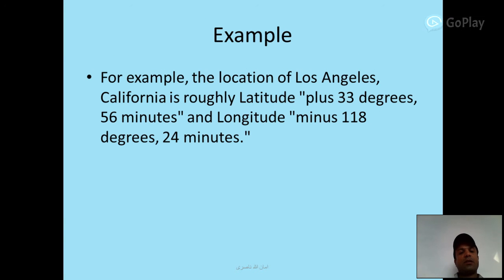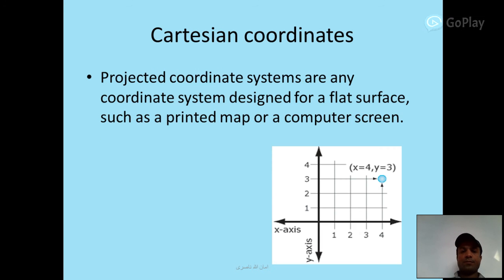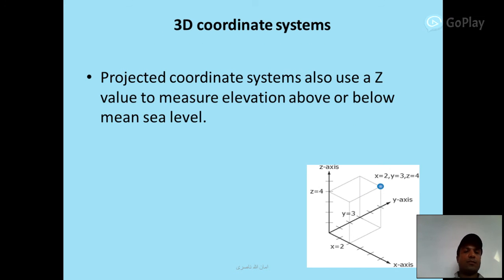For example, the location of Los Angeles, California is roughly latitude +33 degrees 6 minutes and longitude -118 degrees 24 minutes. Cartesian Coordinates: project coordinate systems are any coordinate systems designed for a flat surface, such as a printed map or a computer screen. 3D coordinate systems also use a Z value to measure elevation above or below mean sea level.